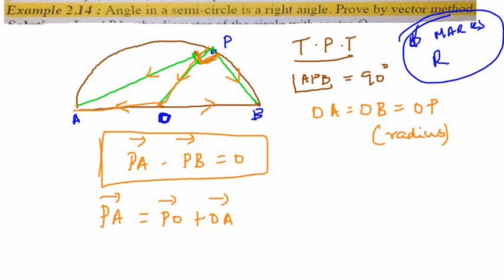Likewise, PB vector is nothing but PO vector. But can I write OB as negative of OA? Because the direction is opposite. So I can say PO vector minus OA vector.